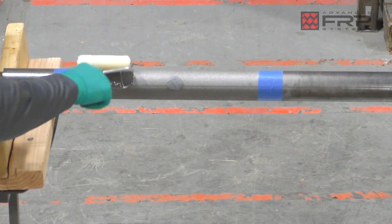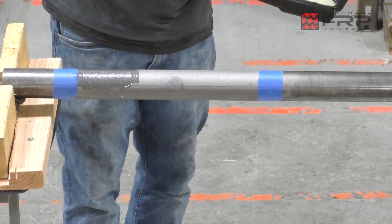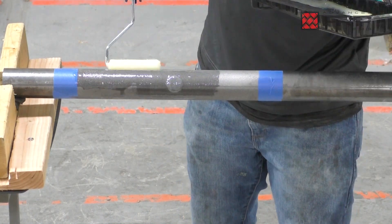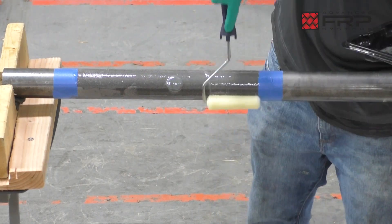Apply FRP211HT Saturant to repair area at 5 to 10 mils thick using the prepped roller while avoiding drips, sags, or holidays. Be sure to check the entire circumference of the pipe for an even application.